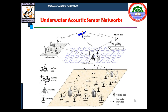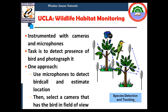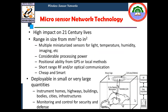Another application is that some sensors are capable of working underwater. Another real-time example is the Intel wireless vineyard, where one sensor was connected to every tree to monitor its conditions — whether sufficient water is given, whether the fruit is healthy, or if there is any damage. In wildlife habitat monitoring, bird calls detected by a microphone allow a sensor to trigger a camera to capture a picture, enabling tracking of bird movements.